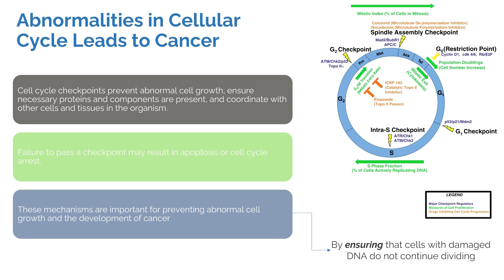Cell cycle checkpoints prevent abnormal cell growth by ensuring that necessary proteins and components are present and coordinating with other cells and tissues. Failure to pass any checkpoint may result in apoptosis or cell cycle arrest. If the checkpoint protein is working correctly, it will cause apoptosis or arrest in an abnormally growing cell. However, during various cancers, the checkpoint genes themselves are mutated and dysregulated, which is why they are unable to trigger apoptosis when needed.